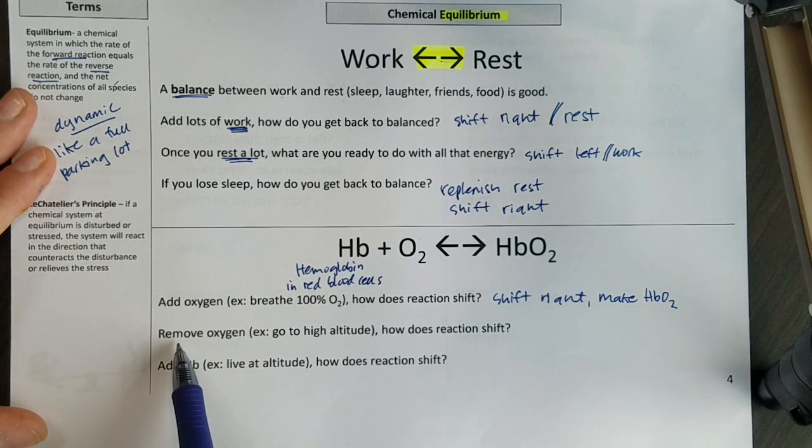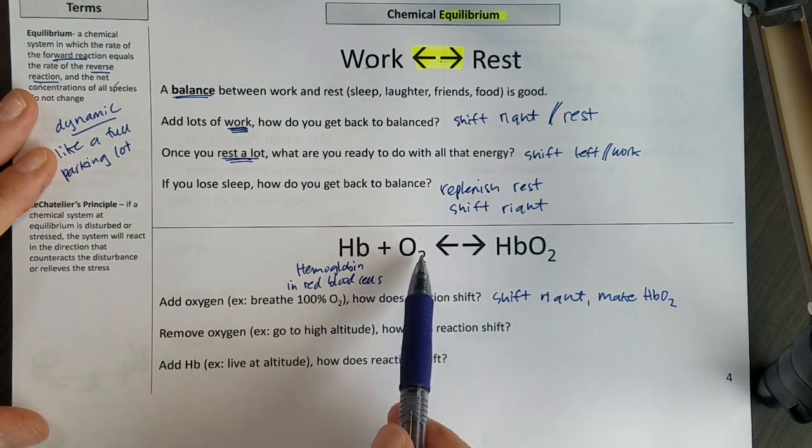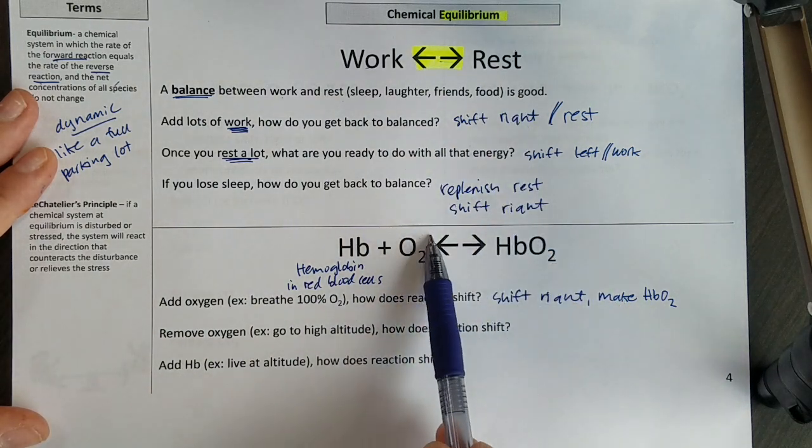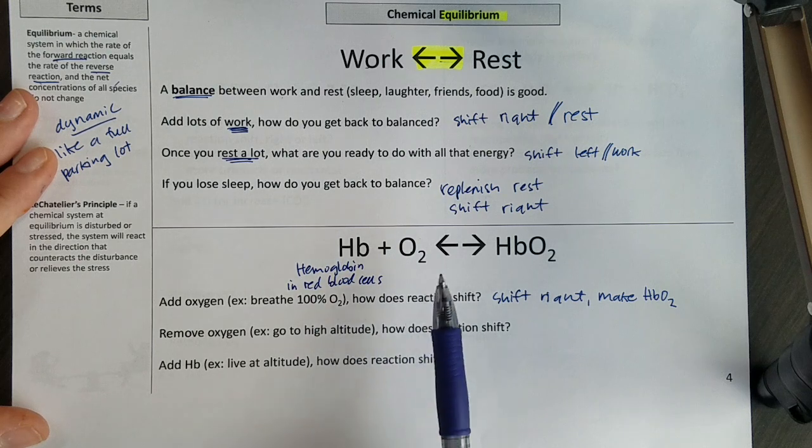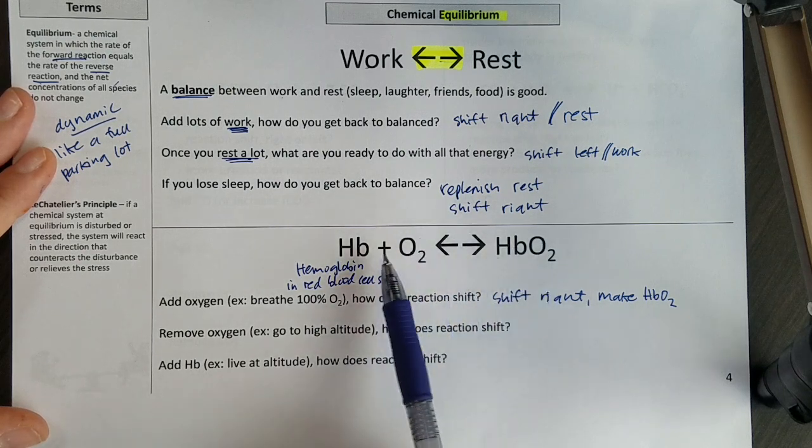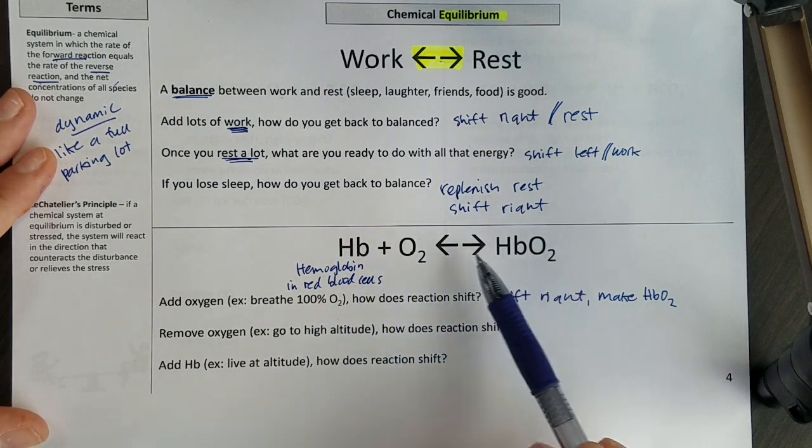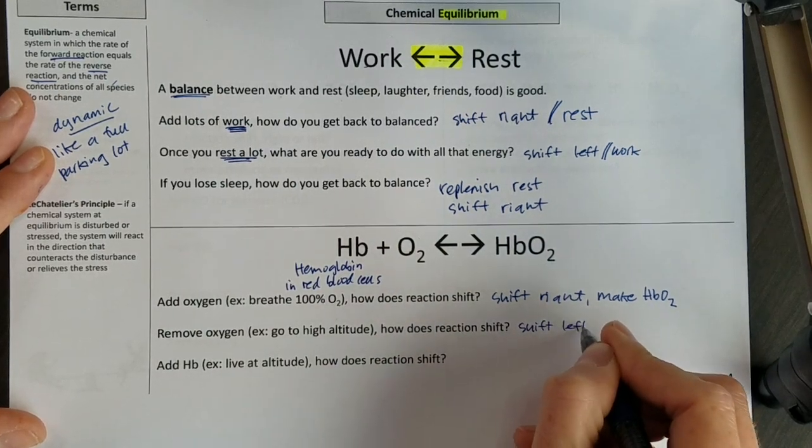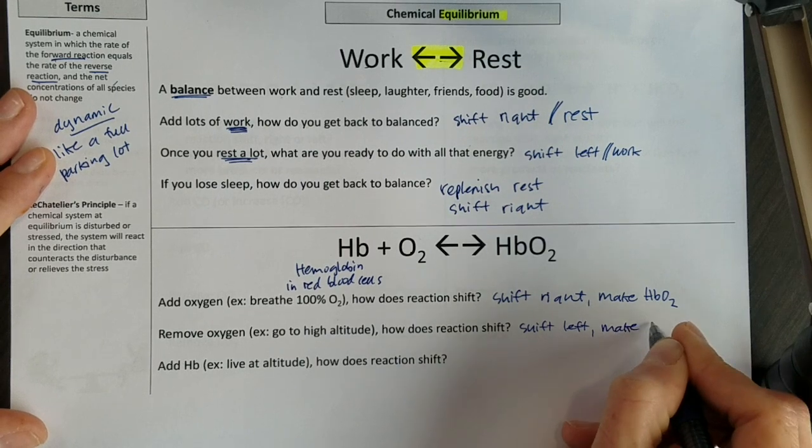In contrast, what if I remove oxygen? So I don't have that now, kind of like where I removed the rest earlier, I lost sleep. If I remove oxygen, say I go to high altitude, then my equilibrium needs to replace it. So I'm going to shift over here to the left to replace that oxygen that I lost.